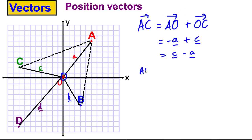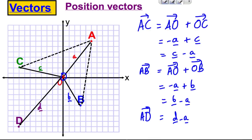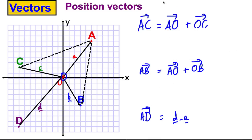Similarly, how would you go from A to B? You would go from A to O, plus from O to B, which is negative a plus positive b, so you have b subtract a. And how would you get from A to D? You go negative a plus d, which is d subtract a. So I'm just going to try and spot a pattern here — something that hopefully you can spot in a second.